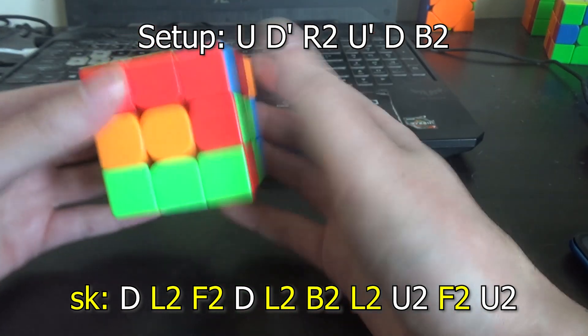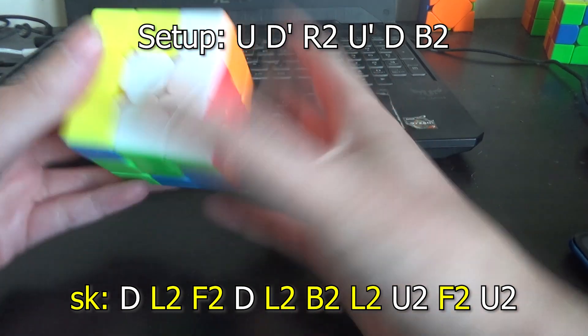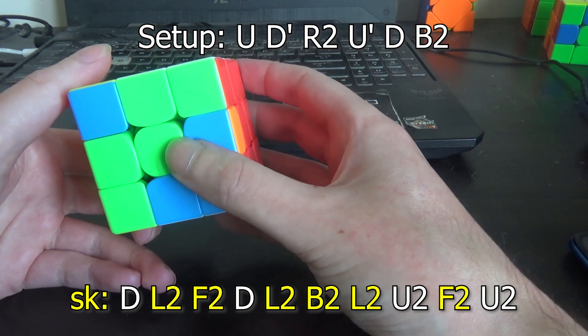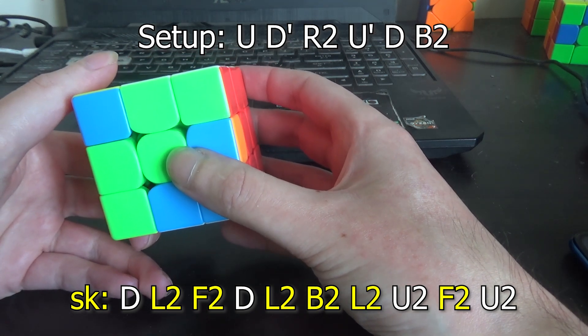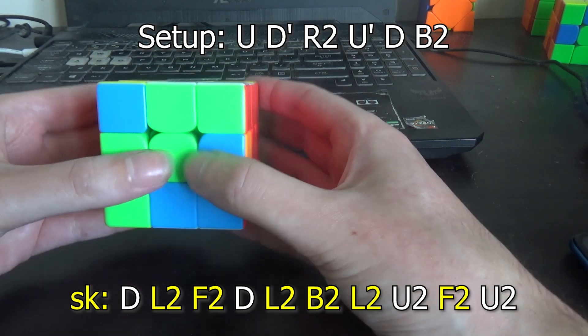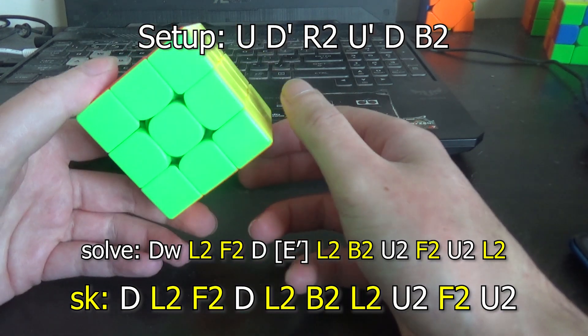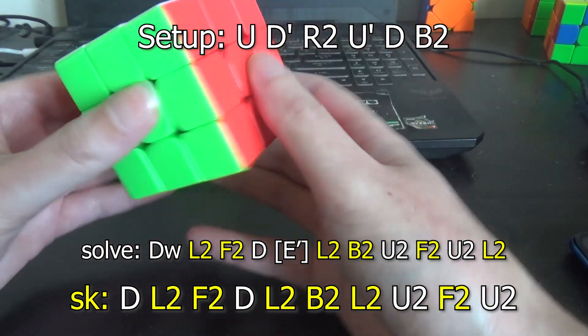So going back to the start of the skeleton, I'm going to try doing a DW, L2F2D, E prime, L2B2. Now at this point, we can insert the 8-8. So instead of doing L2U2F2U2, we do U2F2U2L2 and by golly, it has solved the cube in just one move.